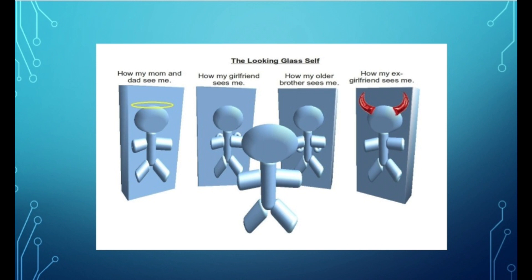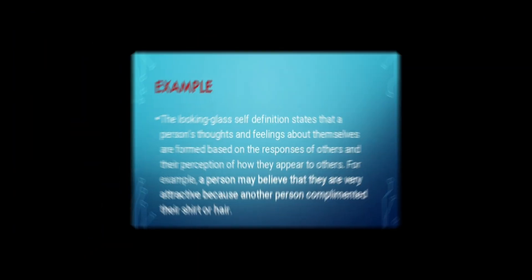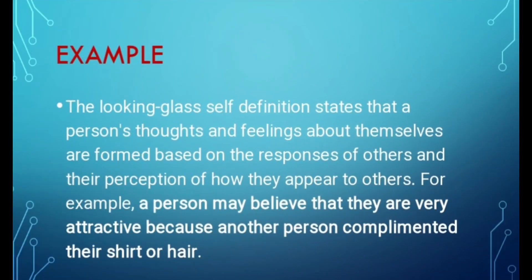اب یہ ایک figure ہے جس میں لکھا ہوا ہے Looking Glass Self۔ How my mom and dad see me — کہ کس طرح اس کے parents اسے دیکھ رہے ہیں۔ How my girlfriend sees me — میری girlfriend مجھے کس طرح دیکھ رہی ہے۔ How my older brother sees me — میرا بڑا بھائی مجھے کس طرح دیکھ رہا ہے۔ How my ex-girlfriend sees me — اس کے لئے غصے والا sign آیا ہوا ہے۔ Mirror کے اندر وہ personalities ہیں — جو next person ہے وہ مجھے کس طرح دیکھتا ہے۔